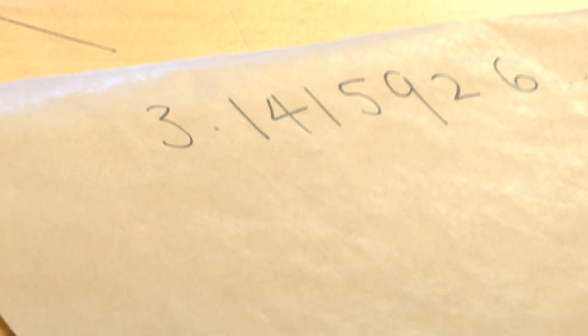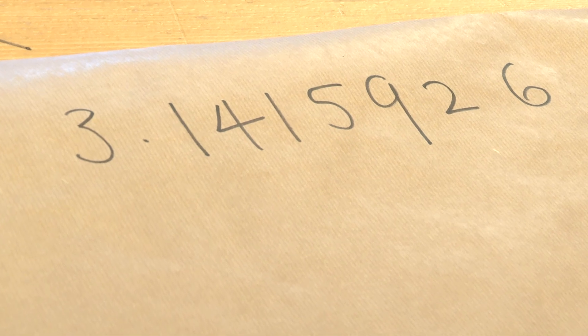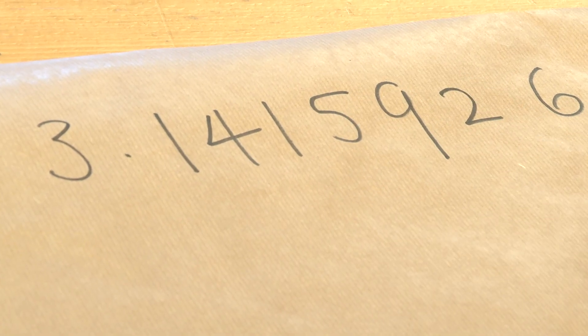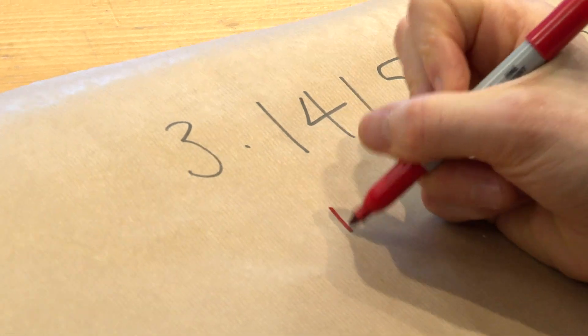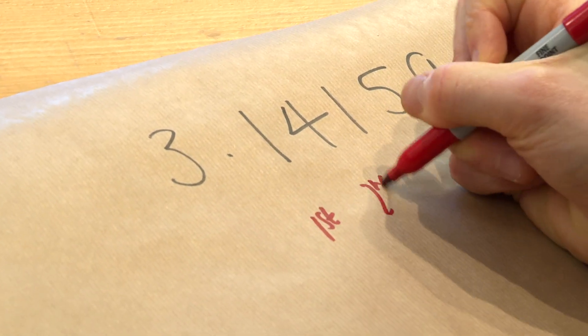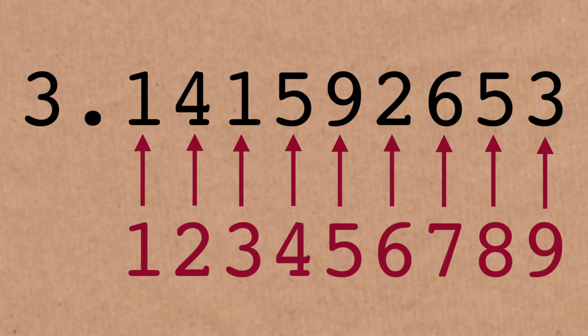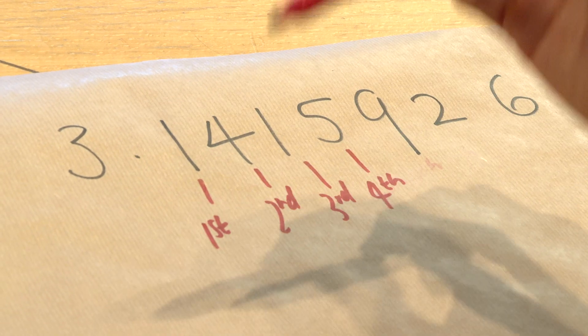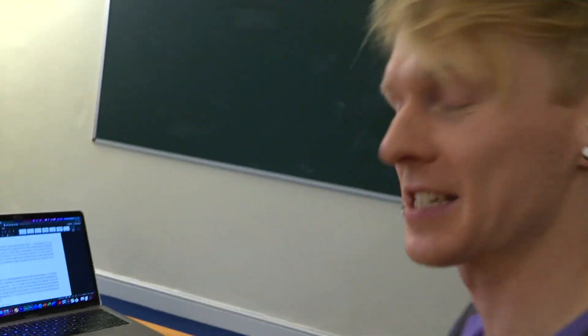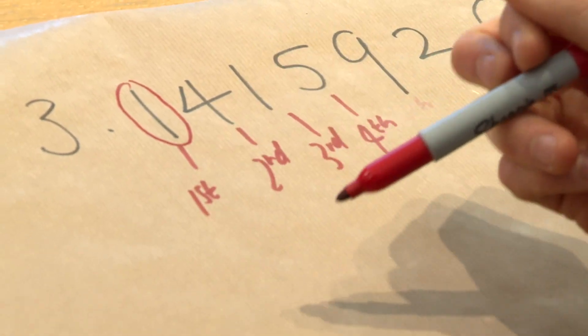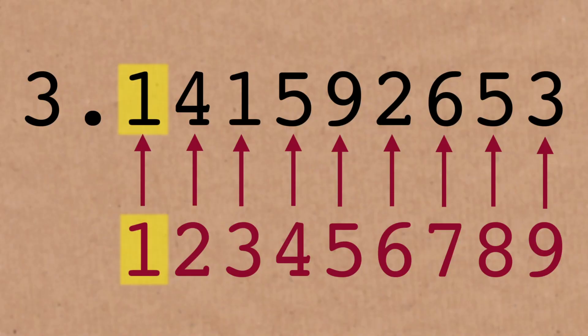What we want to do for these self-locating strings is to label each position after the decimal point. So we're going to start with the first number — this is the first position, the second position, the third. The question you ask to find a self-locating string is: you want the number to match its position in the decimal expansion. So here we've got our first one — straight away the very first digit, number one, is in the first place. So that would be our first self-locating string.